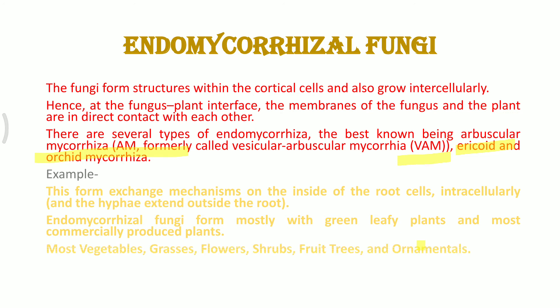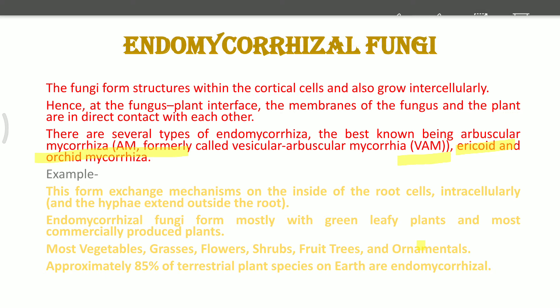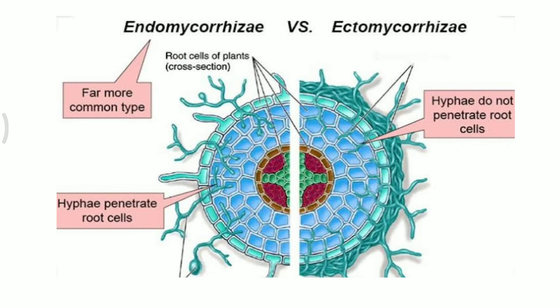Endomycorrhizal fungi are commercially produced because they are very helpful for the growth of plants and make the nutrient content of the soil very rich, allowing grasses, shrubs, flowers, and many other varieties of crops to be grown in almost any condition. Ectomycorrhizal fungi are present outside the cell wall, whereas endomycorrhizal fungi move inside up to the cortical cells and sometimes even reach the pericycle. Both function to provide the plant with rich organic matter and nutrients.